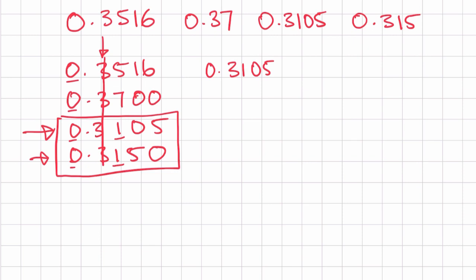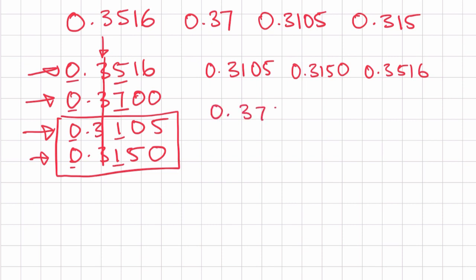So let's write down 0.3105 first, and the next number is going to be 0.3150. Now let's compare the other two numbers. The units column is zero, the tenths column is 3 and 3 — the same. The hundredths column has 5 and 7, so 5 is smaller, giving us 0.3516 next, and the largest number is 0.3700. We've ordered all these numbers from smallest to largest.